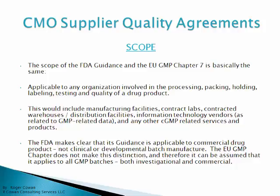The FDA makes clear that its guidance is applicable to commercial drug product, not clinical or developmental batch manufacture. This is in contrast to the EU — EU GMP Chapter 7 does not make this distinction, and therefore it's assumed that it applies to all GMP batches, both investigational and commercial. So there is a distinction between the U.S. and EU regulations.